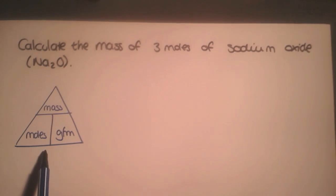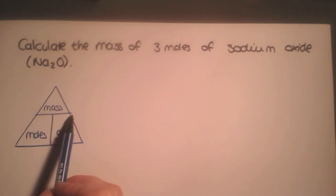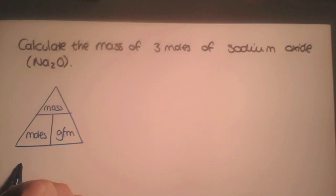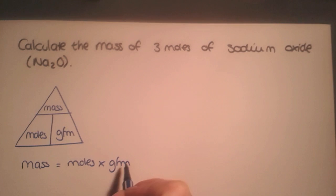This vertical line means multiply and this horizontal line means divide. This is the equation we're going to be using throughout this video. It can also be written as mass equals moles times gram formula mass, and you can simply rearrange the equation depending on what you want to look at.